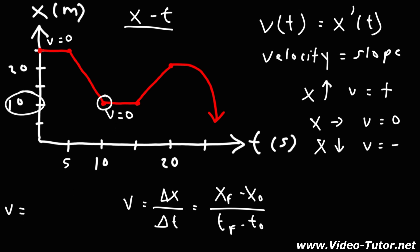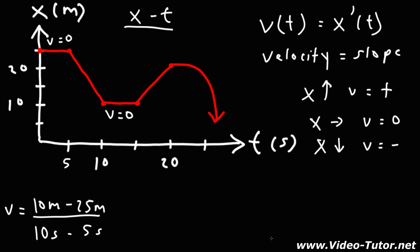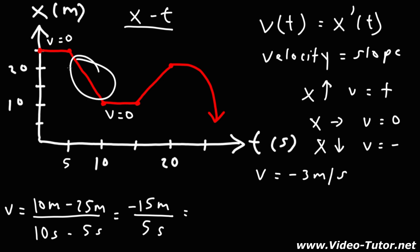X final is going to be a position of 10 meters, minus x initial of 25 meters, divided by t final minus t initial — 10 seconds minus 5 seconds. So the change in position is 10 minus 25, which is negative 15 meters. The change in time is 5 seconds. Negative 15 divided by 5 is negative 3, so the velocity is negative 3 meters per second during this time interval.